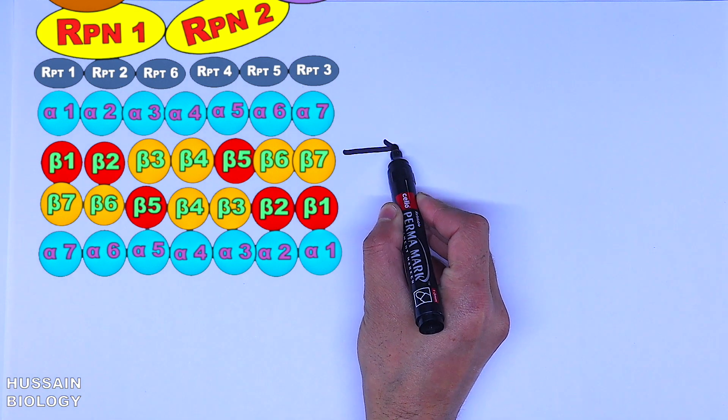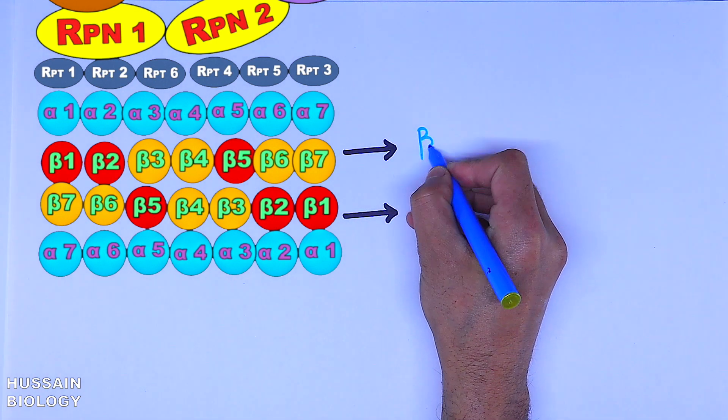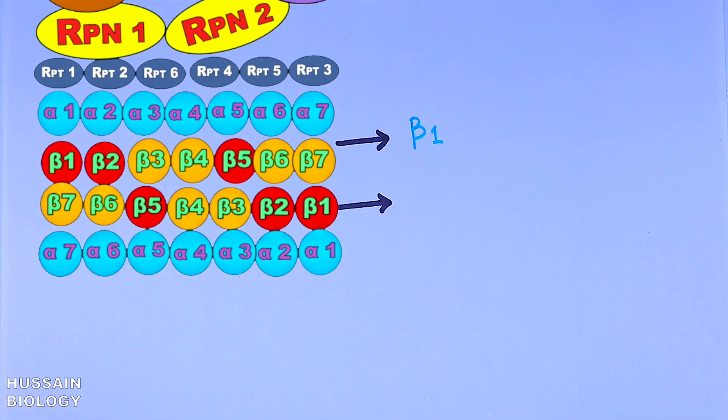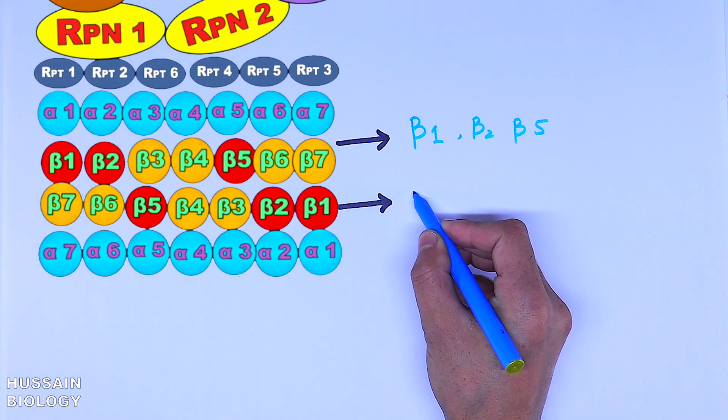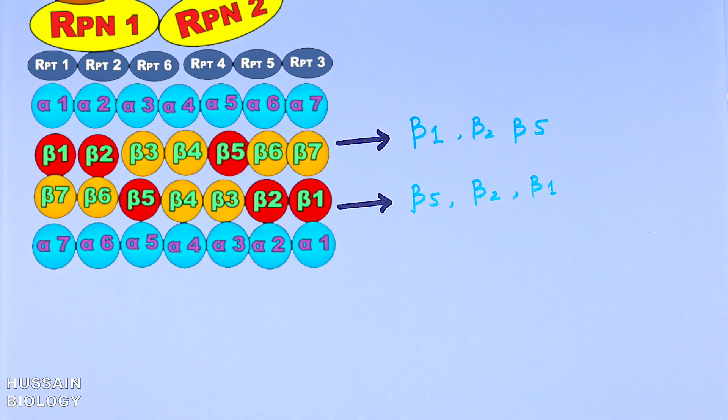Moving further to the next diagram, we can see the standard 26s proteosome. It's having catalytic residues as beta 1, beta 2, beta 5 from the first ring of 26s core, and beta 5, beta 2, and beta 1 from the second ring of beta subunits.